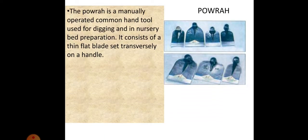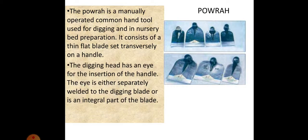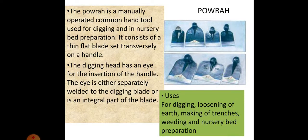Spade (Pavra): it is a manually operated common hand tool used for digging and nursery bed preparation. It consists of a thin flat blade set transversely on a handle. The digging head has an eye for insertion of the handle, either separately welded or integral to the blade. It is used for digging, loosening earth, making trenches, weeding, and nursery bed preparation.